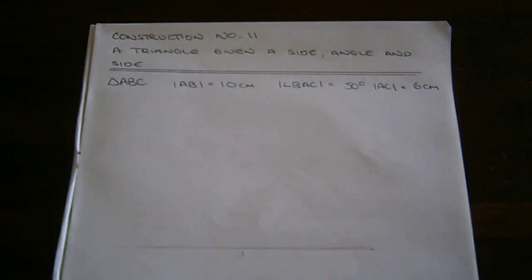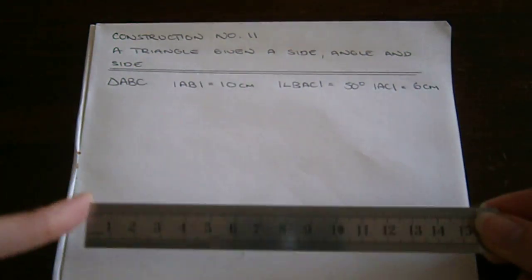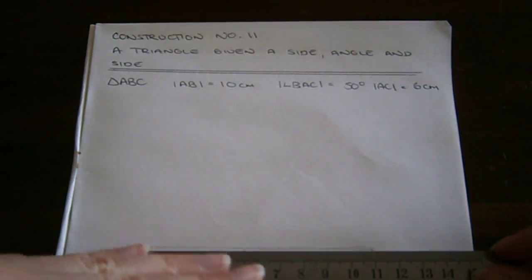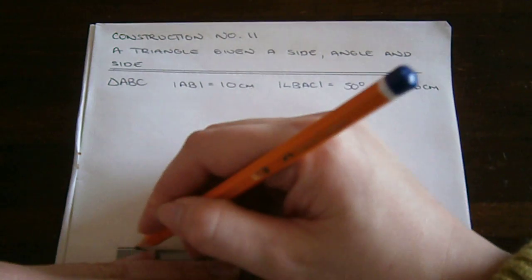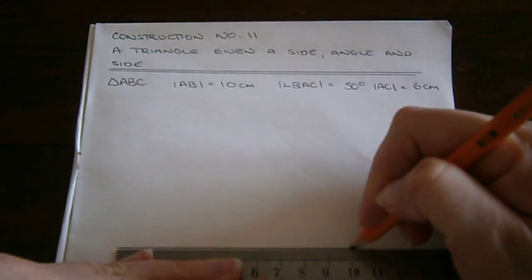We'll start by constructing the base of our triangle, AB, 10 centimeters long. Using our ruler, we draw a line 10 centimeters long.